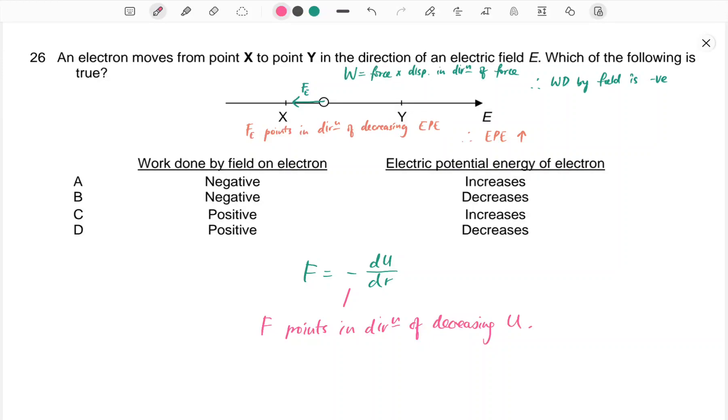In this question, we have an electron moving from X to Y in the direction of the E field. The E field is to the right, which means the force on the electron will be to the left.